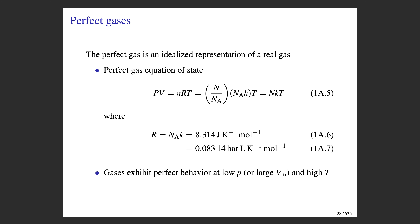So you can use Boltzmann's constant k with number of molecules, or the gas constant R with number of moles. Boltzmann's constant and the gas constant are actually the same thing — they differ merely by Avogadro's number: R = N_A × k.